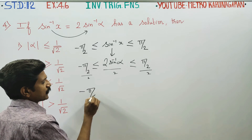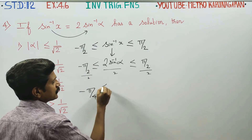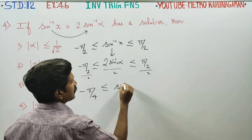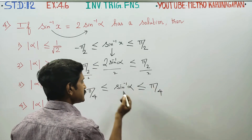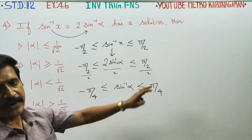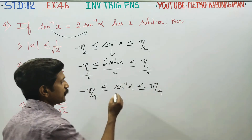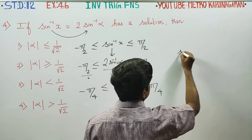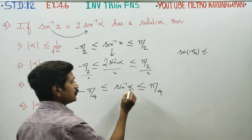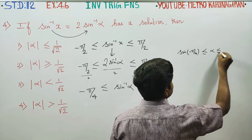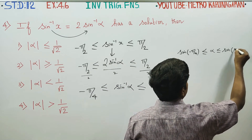After dividing by 2, it becomes minus pi by 4 less than or equal to sin inverse alpha less than or equal to pi by 4. Now apply sin to all terms: sin of minus pi by 4 less than or equal to alpha less than or equal to sin of plus pi by 4.